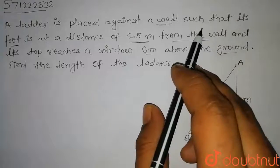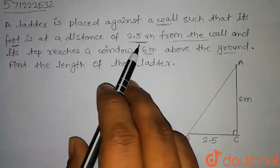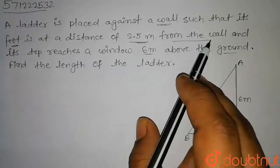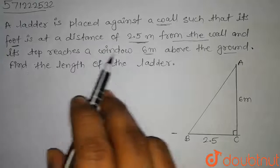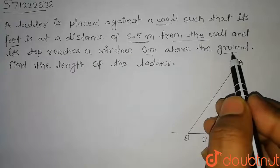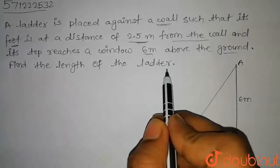A ladder is placed against a wall such that its foot is at a distance of 2.5 meters from the wall and its top reaches a window 6 meters above the ground. Find the length of the ladder.